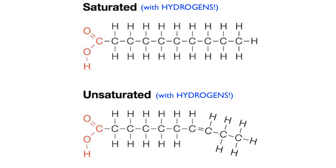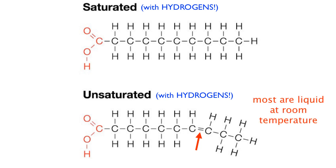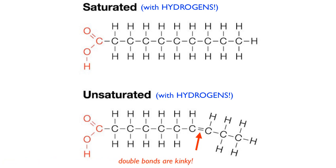Fatty acids can also be unsaturated. What you're looking for is a double bond. A double bond means those two carbons can't each have two hydrogens attached, because you can only have four covalent bonds total. This has real dietary implications because whether or not there is a double bond impacts how the fatty acid behaves — things like whether it is solid or liquid at room temperature. Saturated fats, because they're very linear, pack tightly and are solid at room temperature. Unsaturated fatty acids have a kink in the chain from the double bond, so they tend to be liquid at room temperature because the fatty acid tails don't pack as tightly.